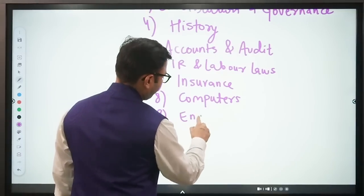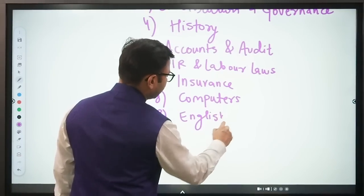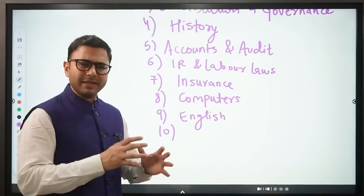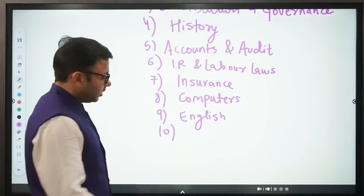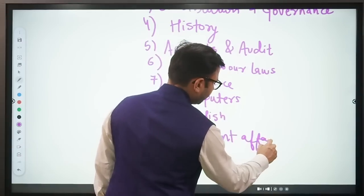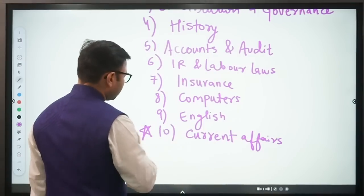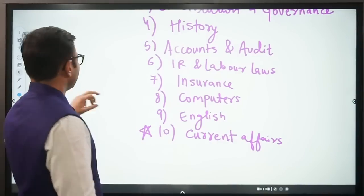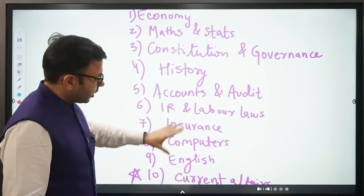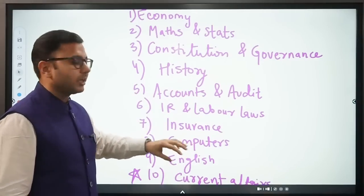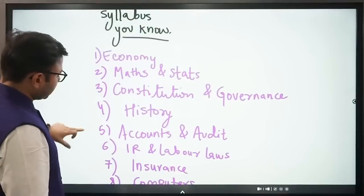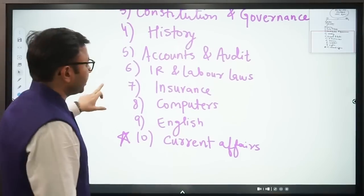Then we have English. This again is the easier part. If you are fine with basic vocabulary, fine with basic English, then you should be able to tackle this area. The last that we have is current affairs. Now, this is very important. I have told you a lot of sources in another video. You can refer to that. But there are a lot of questions here. Especially for subjects like economy, constitution, history. This is also the same as labor laws, insurance. Here is the role of current affairs. Now, this is all. A total of 10 topics, I believe, that cover the entire syllabus that you know presently.